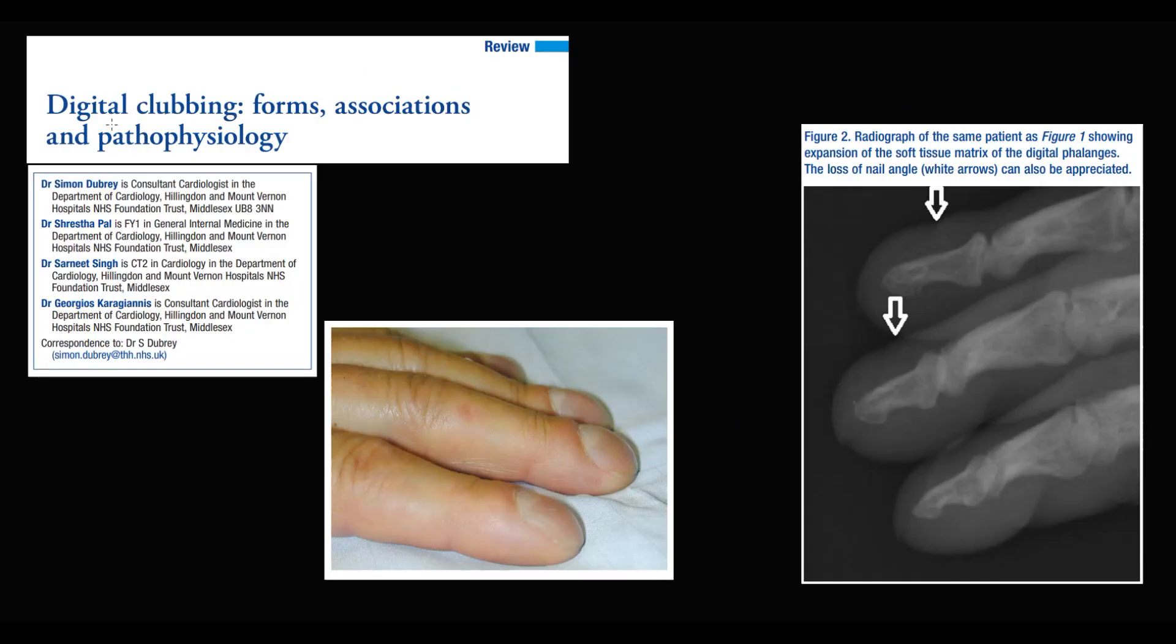On this image we can see digital clubbing of fingers. On the second image, we can see an X-ray showing expansion of the extracellular matrix of fingers. This expansion is caused by overproduction of collagen in response to hypoxia.